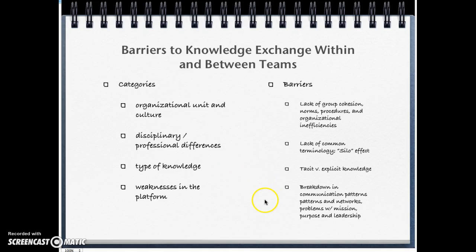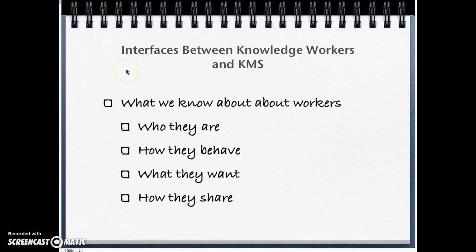Weaknesses in the platform involve breakdowns in communication patterns, networks, mission, purpose, and leadership. Addressing barriers between teams really comes down to leadership. Leadership needs to set the tone for cooperation between teams and different parts of the organization — without that, problems will continue and information will not be easily exchanged.